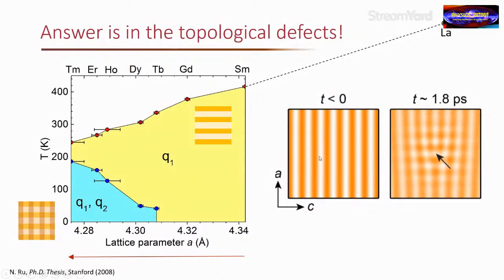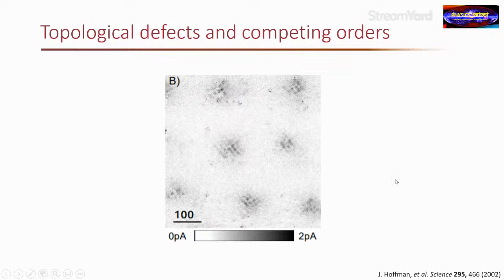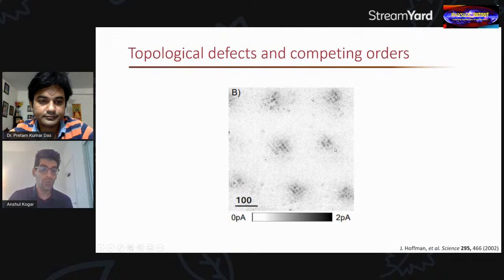We got the idea that the a-axis sub-dominant order is actually forming at the cores of the topological defects. This has been seen before in superconductors: if you apply a magnetic field you get vortices, and you can see other kinds of order form inside those vortices. Our picture is analogous — when you excite the material with light you form topological defects, and within those defects the sub-dominant a-axis order shows up.